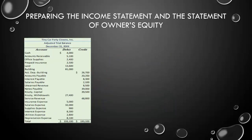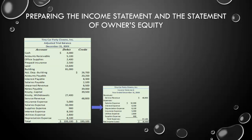Let's prepare the income statement and the statement of owner's equity for Tiny Car Party Clowns Incorporated. Starting with the income statement, we bring over our service revenue balance and all of our expense balances from the adjusted trial balance. The expenses are listed in descending order of amount, which is common in the field. I usually won't knock points if expenses are out of order for this class, but that's the way users prefer expenses to be listed.